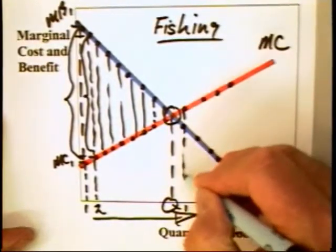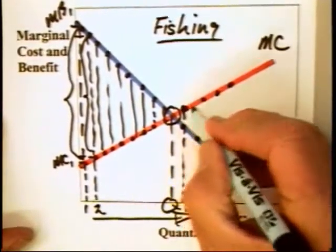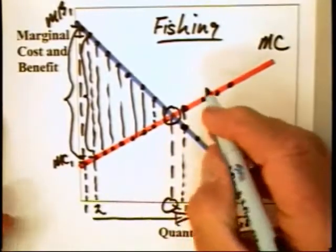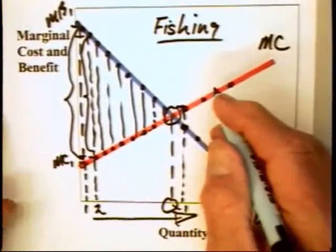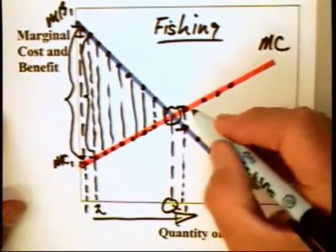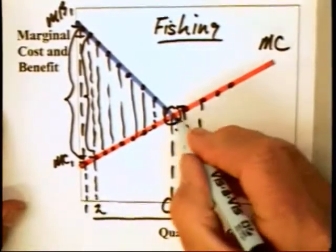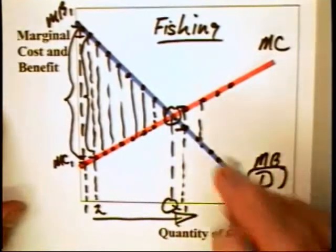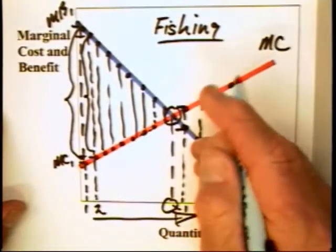If you go beyond Q1, then the marginal cost is greater than the marginal value. That means that the value of that which is given up is greater than the value of the fish that can be caught. So a person has optimized or maximized his or her well-being at this intersection.